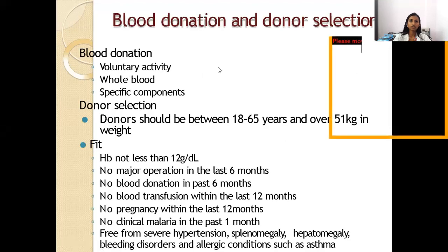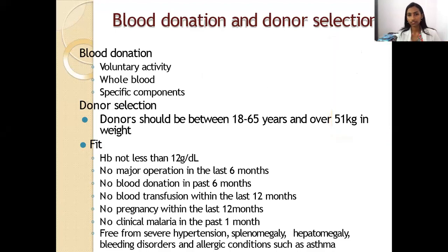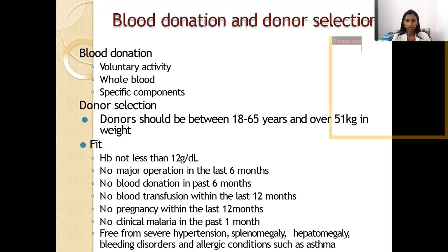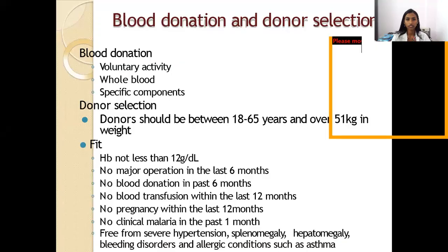For blood donation, it should be a voluntary activity involving whole blood or specific components. Donor selection criteria: donors should be between 18 to 65 years of age and over 51 kg in weight. Fitness criteria include hemoglobin not less than 12 grams per deciliter, no major operation in the last six months, no blood donation in the past six months, no blood transfusion within the last 12 months, no pregnancy within the last 12 months, and no clinical malaria in the past one month. Must be free from severe hypertension, splenomegaly, and hepatomegaly.